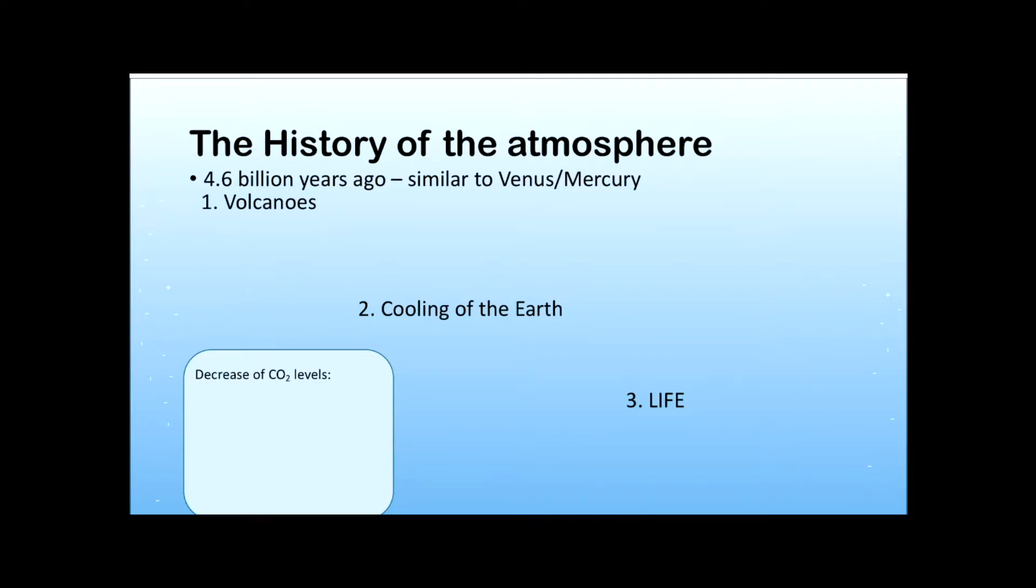What they need you to know are three parts really: what volcanoes have done, what the cooling of the Earth did, and what life has done for the atmosphere too. We start 4.6 billion years ago when we think the atmosphere was very similar to Venus and Mercury. Bear in mind that we have no evidence of this. 4.6 billion years ago it's impossible for us to have any records from ice cores or anything like that. It's simply so long ago, but we can predict that's what it is, and it's the most likely theory.